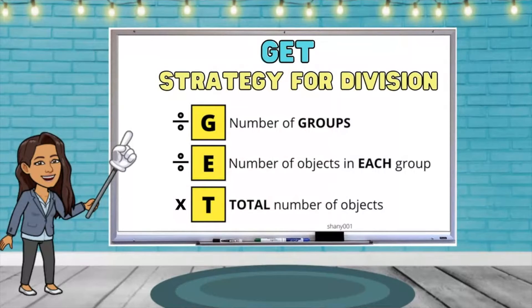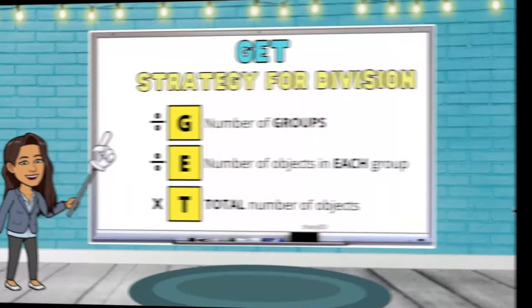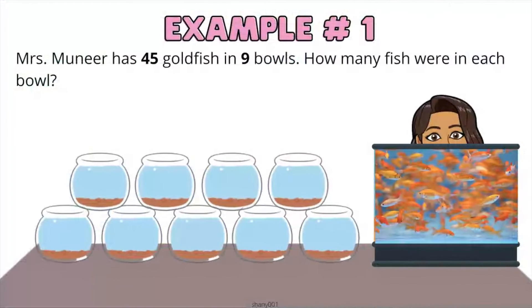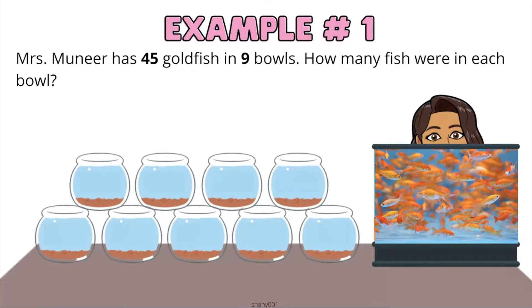Let's go ahead and try some examples. Example number one: Mrs. Muneer has 45 goldfish in 9 bowls. How many fish were in each bowl?